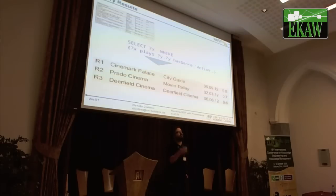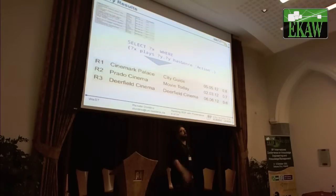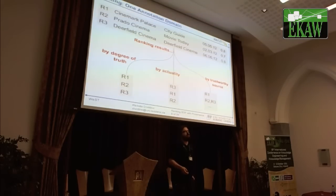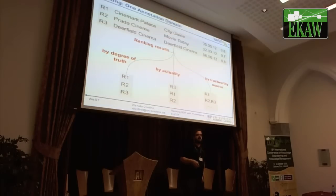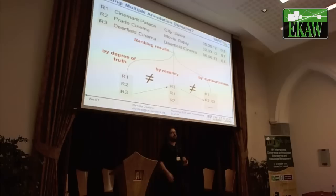For example: give me all cinemas which play action films currently. I'm asking that to different web sources — like City Guide, Movie Today, or Dearfield Cinema — which are artificial information sites about cinema programs. I get a value for the actuality of the data and for the trust of the data. What I want to do now is rank my results, and I want to present the user a proper ranking. I can rank for each provenance data item independently — by degree of truth, by actuality, or by trustworthiness — but what I actually want to do is combine all three provenance values to build an aggregated ranking.